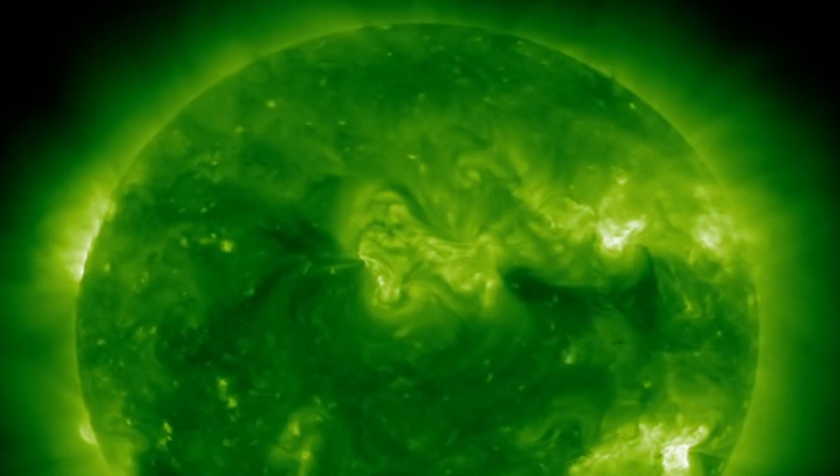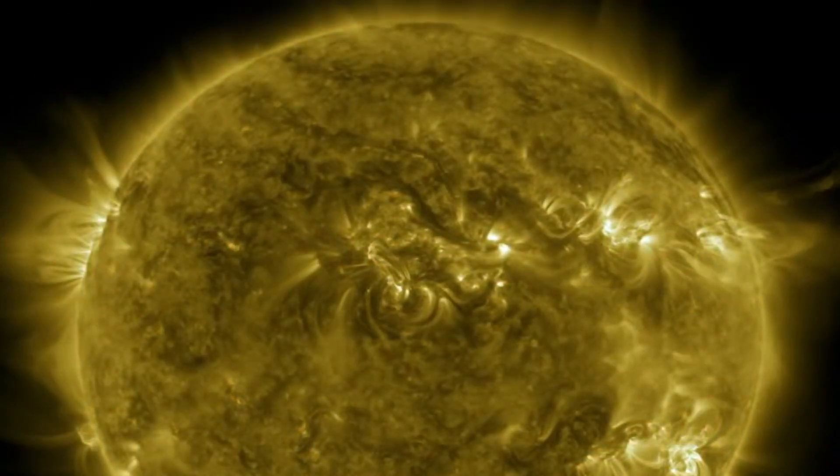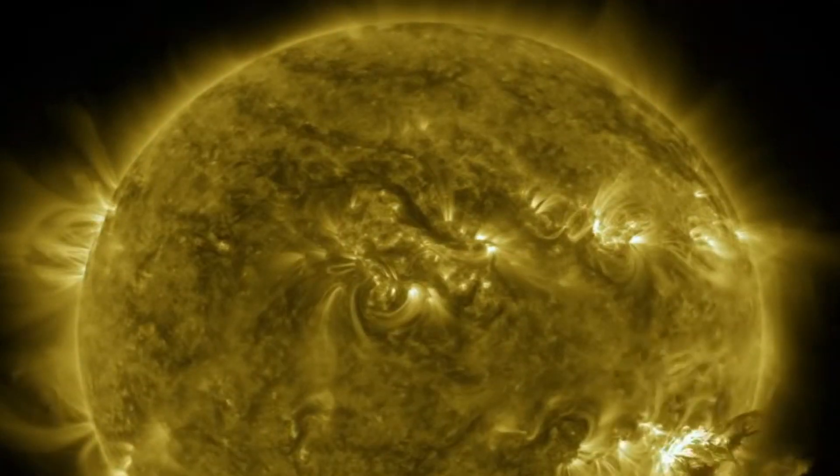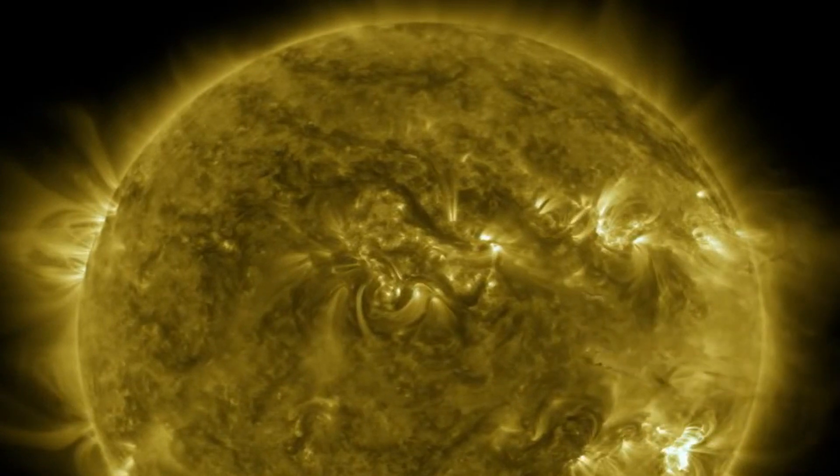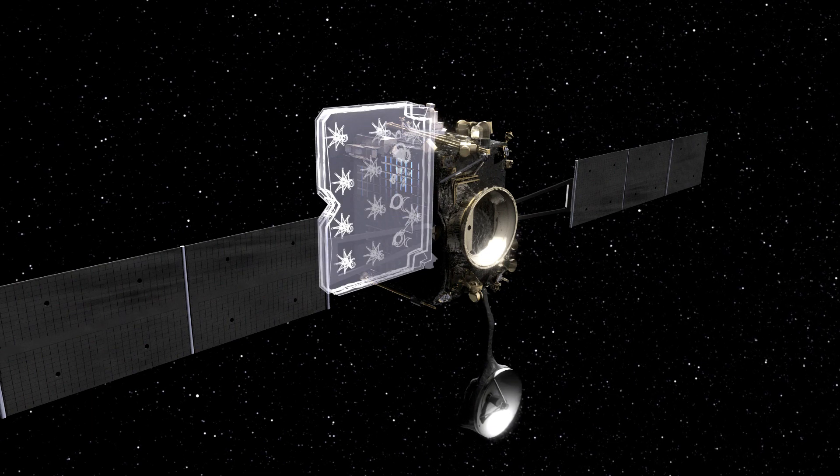It then employs filters to concentrate on distinct wavelengths of the light. Subsequently, the instrument generates images that assist us in studying temperature variations on the Sun.